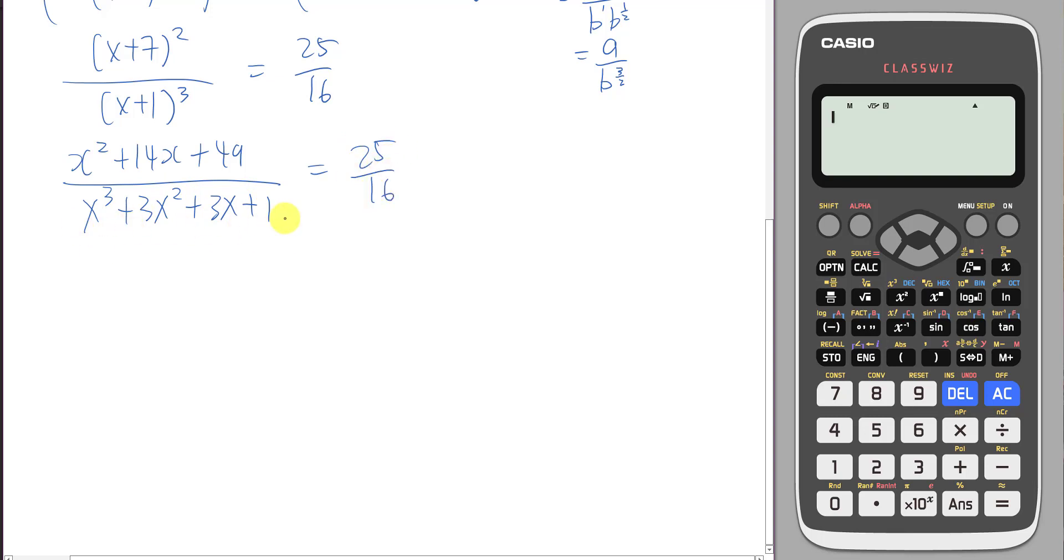If you're not sure how to do the binomial expansion, you can just multiply the x plus 1 for three times. Then I want to cross over multiply. The number will go a bit crazy, but just use a calculator. Just type 16. Cross over multiply, x square plus 14x plus 49 times 16. Then 25, multiply all of them. Then I will make it equal to 0. And then I'm trying to solve this cubic equation.